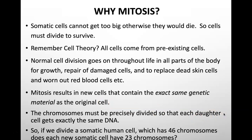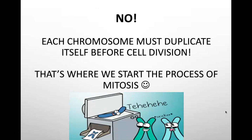The chromosomes must be precisely divided so that each daughter cell gets exactly the same DNA. So if we divide a somatic human cell, which we know has a diploid set of 46 chromosomes, does that mean that each of the new cells that are produced from that division have half of those? Does each new somatic cell have 23 chromosomes? Well, no, that can't be the case. Each chromosome must duplicate itself before the process of cell division.